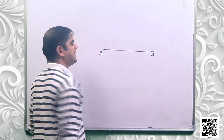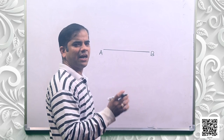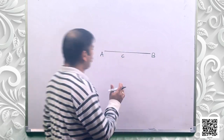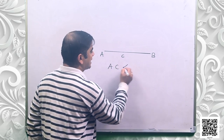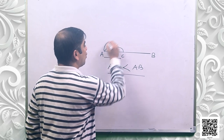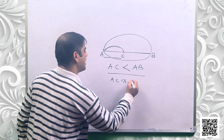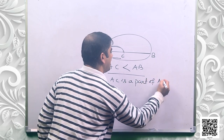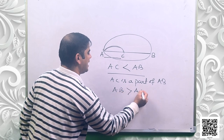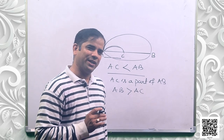Suppose this is a line segment AB. AB is a line segment which can be treated as the whole. Let us have a point C on the line segment AB. It is clearly obvious that AC is less than AB. AC is nothing but a part of the whole — AC is a part of AB. It is obvious from the diagram that AC is less than AB, or AB is greater than AC. So it is a universal truth that the whole is always greater than a part.